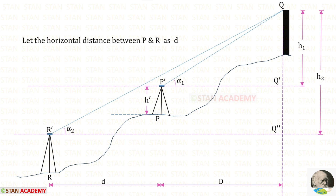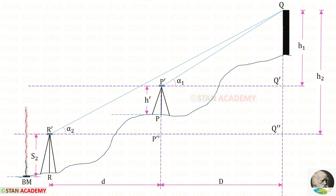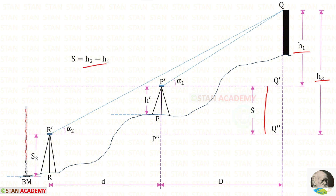We have to measure the horizontal distance between stations R and P. Let us keep the distance as d. At the benchmark we have to keep a leveling staff. From station R we have to take the staff reading. Let us keep the staff reading as S2. From point P, let us make a vertical projection. Let us keep this point as P double dash. We know that this vertical distance will be H2 minus H1. Let us keep that as S.